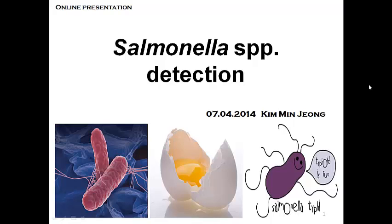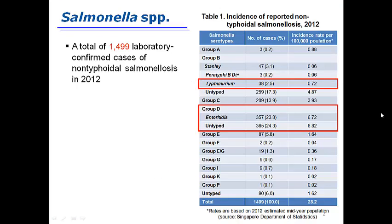Hello everyone, I'm John. I will present how to detect Salmonella species from food products. Salmonellosis is a worldwide infectious disease, commonly presenting as fever, diarrhea, and sometimes vomiting. According to this table, in Singapore a total of about 1,500 confirmed cases of non-typhoidal salmonellosis in 2012 were reported.